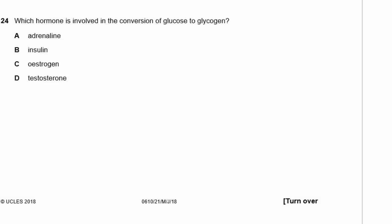Question 24: Which hormone is involved in the conversion of glucose into glycogen? Adrenaline is fight-or-flight, estrogen is a female hormone, testosterone is a male hormone. Insulin converts glucose into glycogen.